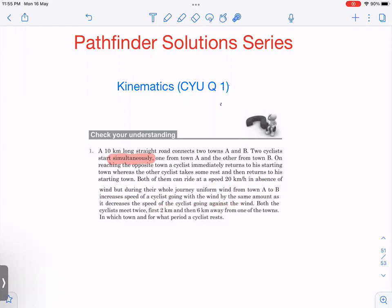Now, the last line is that both the cyclists meet twice, first two kilometers and then six kilometers away from one of the towns. Then in which town and for what period does a cyclist take rest? That is what we need to find out.